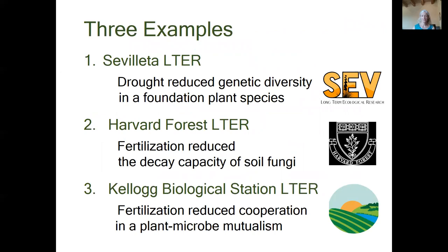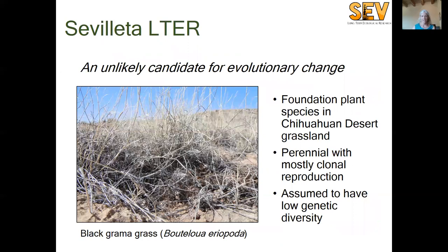Today I will walk you through three case studies that illustrate the power of the LTER network for understanding evolution. Each example has a unique punchline that helps to highlight the diversity of approaches and species represented across LTER sites. The first case study comes from our work at the Sevilleta LTER site in New Mexico. The foundation plant species, black grama grass, dominates grasslands of southwestern North America.